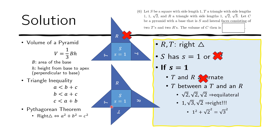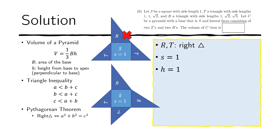Because the height is the length from the base to the apex such that it is perpendicular to the base, we have H equals 1. The height of the pyramid is 1. The area of the base is also 1 squared equals 1. Therefore the volume becomes very easy to compute: volume equals one third times base area times height, which gives us a volume of one third.